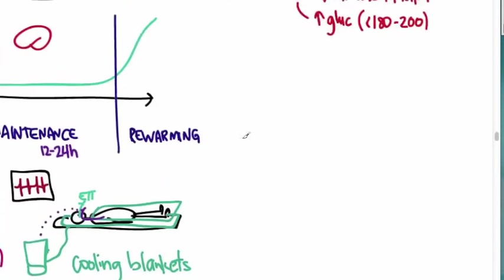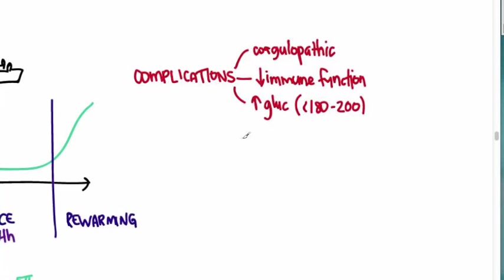And we'll talk about the complications again. Patients can get coagulopathic. If so, keep them on the warmer side of that range, about 34. There can be some decreased immune function so not necessarily a good thing to do for our septic patients. And watch their sugars. And that's it.